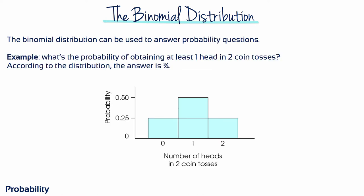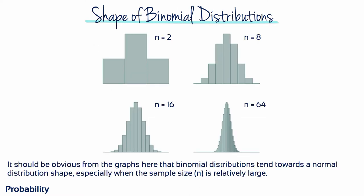The binomial distribution can be used to answer probability questions. For example, what's the probability of obtaining at least one head in two coin tosses? According to the distribution, the answer is 3 out of 4. These binomial distributions show the probability for the number of heads in two tosses, eight tosses, 16 tosses, and 64 tosses of a balanced coin. It should be obvious from the graphs that binomial distributions tend towards a normal distribution shape, especially when the sample size N is relatively large.